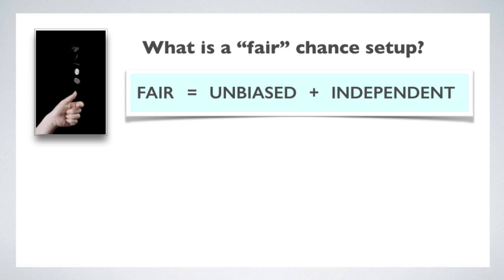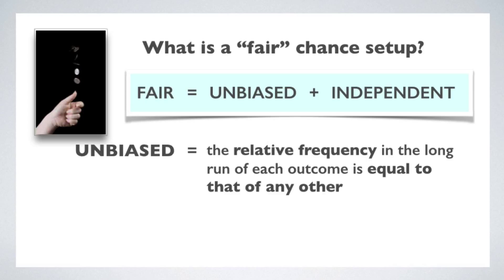To call a chance setup fair is to say two things: one, that the outcomes are unbiased, and two, that the outcomes are independent. These are not the same thing. To say the outcomes are unbiased is to say that in the long run, each of the possible outcomes shows up as often as any other. We can say that in the long run, the relative frequency of each outcome is equal to that of any other outcome.